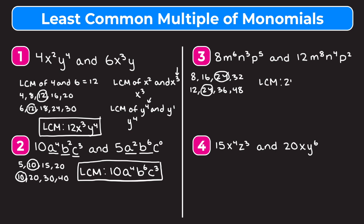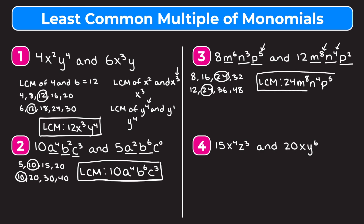For our overall LCM we start with 24. For the variables: m to the sixth and m to the eighth — we take the higher exponent, m to the eighth. For n to the fourth and n to the third, we take n to the fourth. For p to the fifth and p squared, we take p to the fifth. So our least common multiple is 24m to the eighth n to the fourth p to the fifth.